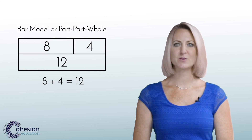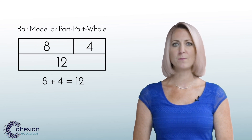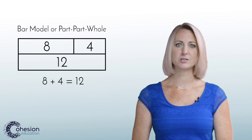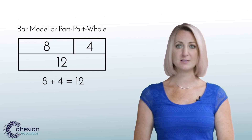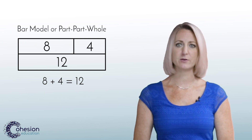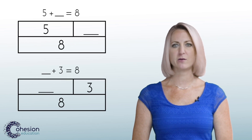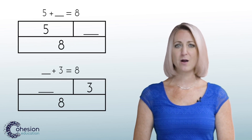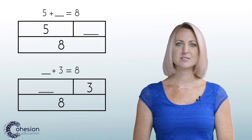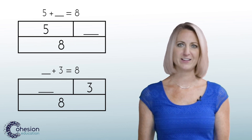In this lesson students will use a bar model, also called a part-part-whole model, to solve addition problems. A bar model shows two parts combined into one and can be used with adding to and putting together types of addition problems. This model is an especially powerful tool for representing a problem with an unknown addend. Students will connect the visual representation of the bar model to writing the equation.